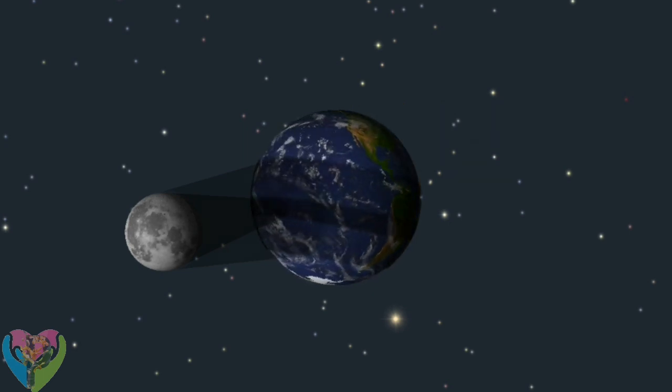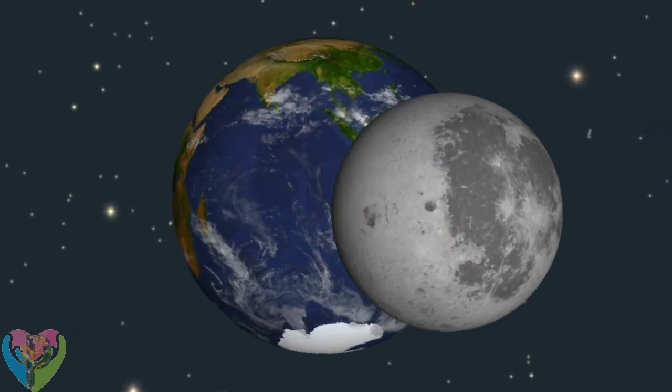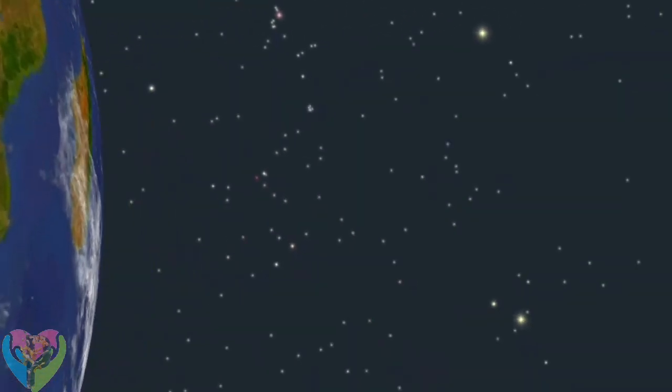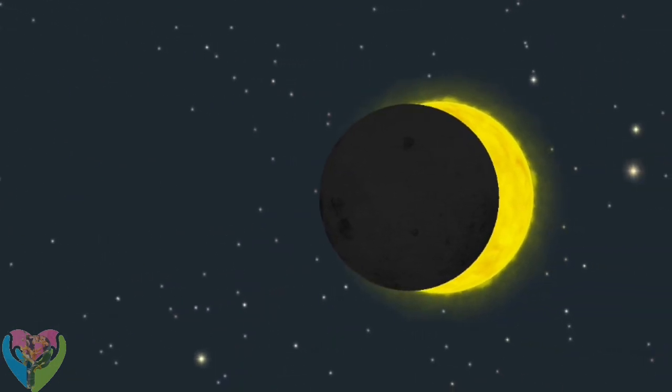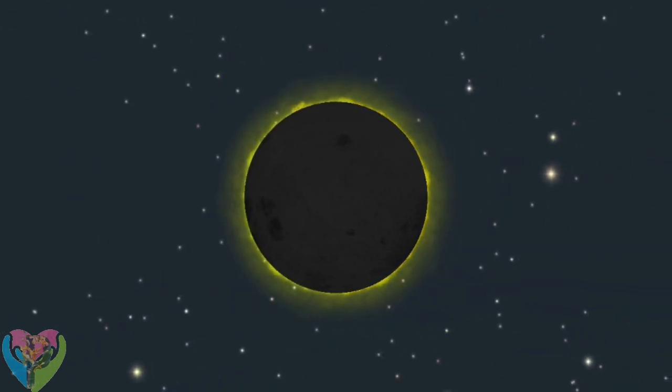To see a total solar eclipse, you must be somewhere inside the narrow path of totality. A total solar eclipse can only occur when the new Moon passes between the Earth and the Sun.